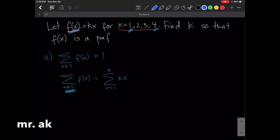Because this is, again, this is our support. This is s. So x runs from 1 to 4. And this should be 1. This should be equal to 1, as we said a while ago.